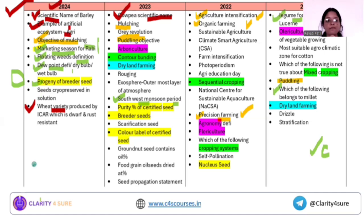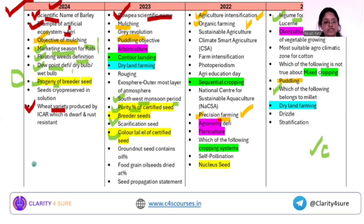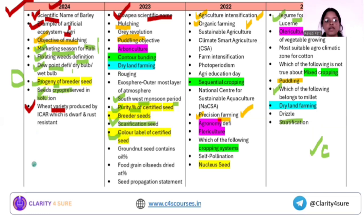Next is the seed classes. Everything highlighted in yellow is part of the seed classes — a really important part. Questions can be from the progeny, the purity percentage, and the color tag of that particular seed class. Next is seed dormancy from seed science. In 2021 the question was on stratification from seed dormancy; in 2023 the question was on scarification. The cryopreservation solution used for seeds is liquid nitrogen. The repeated theme here is seed dormancy.